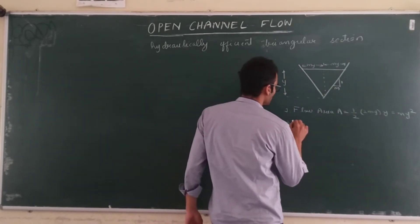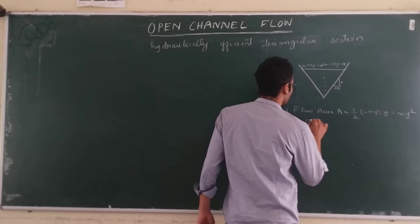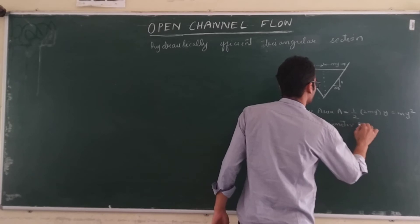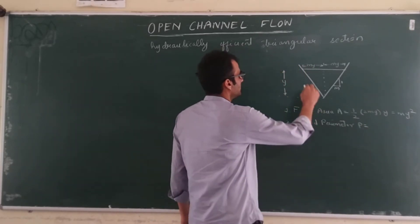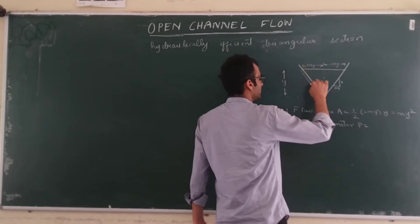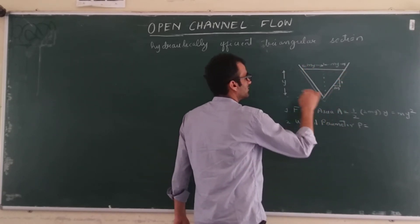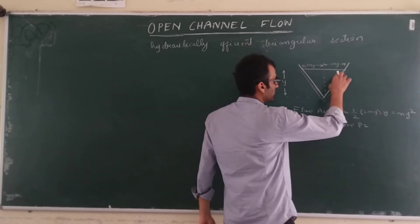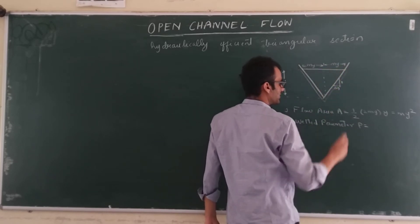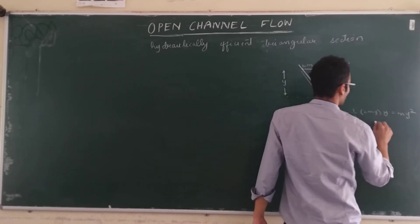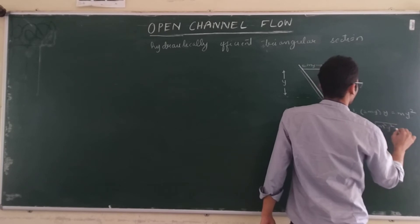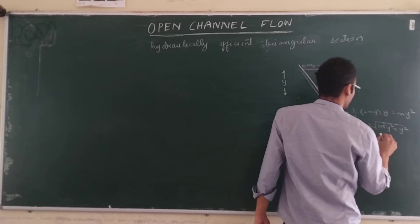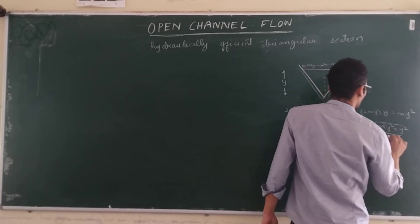Secondly, the wetted perimeter P is the length wetted by the flow — that is, this sloping length on both sides. The sloping length can be found by Pythagoras theorem: the square of the sloping side equals the sum of the squares of MY and Y. So each sloping side is Y√(1 + M²), and the total wetted perimeter is P = 2Y√(1 + M²).